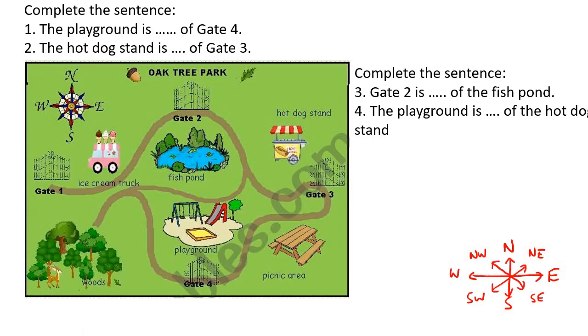So there's four questions here. It says that complete the sentence. The playground. So the playground is over here. Is what of gate number four.